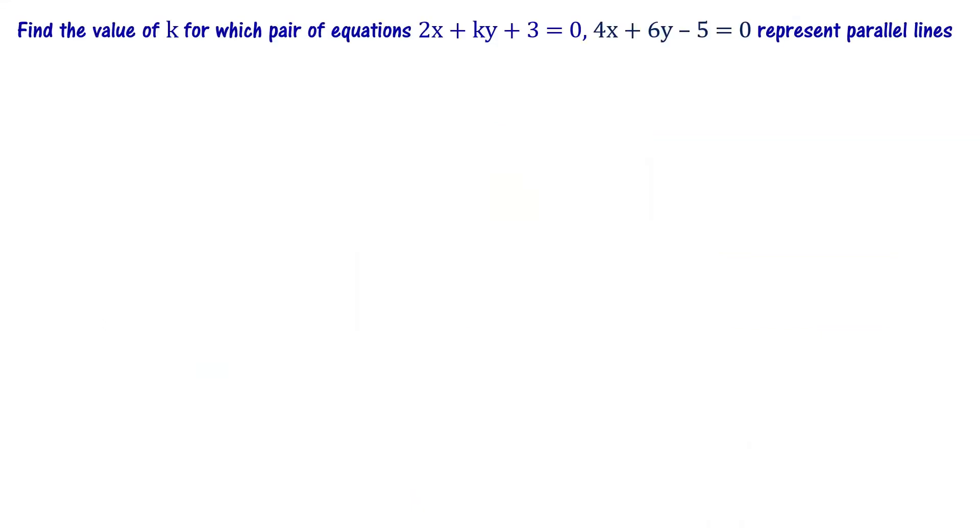Find the value of k for which pair of equations 2x plus ky plus 3 equal to 0 and 4x plus 6y minus 5 equal to 0 represent parallel lines. Parallel lines, we know that equations have no solution and are called inconsistent set of equations.